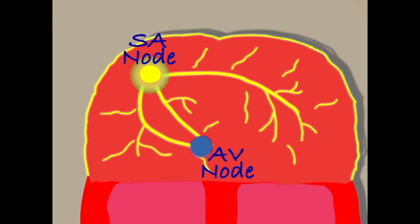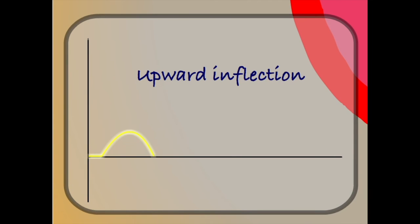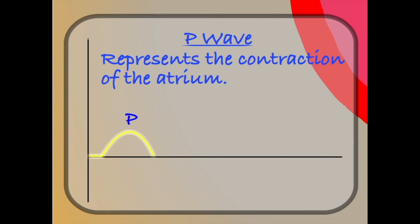The electrical impulse begins at the sinus node, from where it flows through the atrium and down towards the AV node. The flow of electricity is predominantly moving along our lead towards our imaginary eye, so we get an upward inflection on our ECG. We call this upward inflection the P wave — it represents the contraction of the atrium.